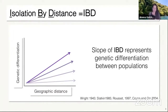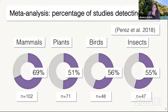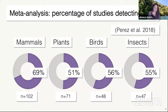We can actually look at the slope of the IBD relationship and use this as a proxy that represents genetic differentiation between populations. However, when we look in nature, it's complicated and there's a lot of variation — as evidenced by this study, the percentage of studies detecting isolation by distance or IBD patterns varies across nature, from 50% to 70% of studies being able to detect IBD. A question that arises is: what drives such variation in genetic differentiation with distance?